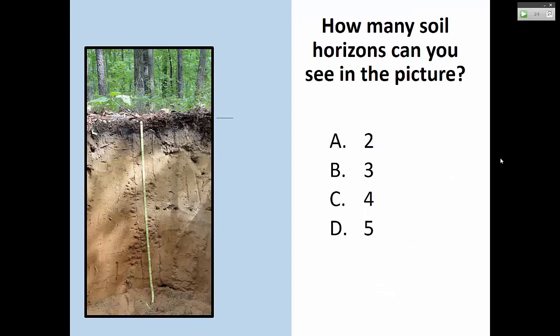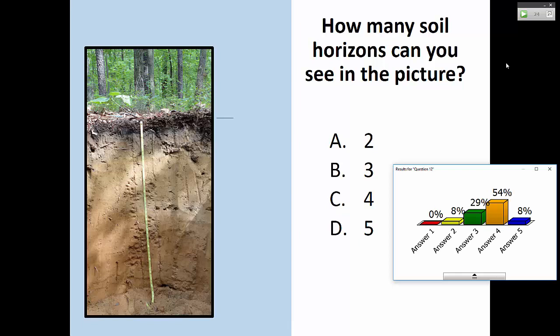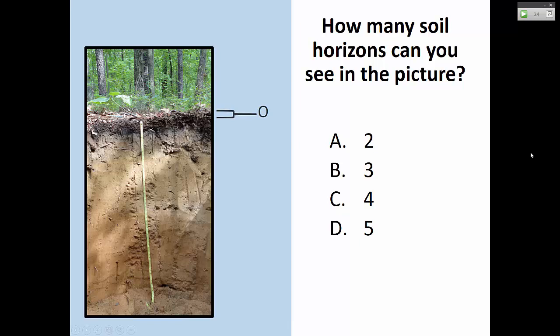Example: how many soil horizons do you see in this picture? Most people said four or five. Going through it: there's an O horizon with leaf litter at the top, then the dark topsoil as the A horizon, then a lighter area which is the E horizon where stuff has been leached out, then one B layer, and actually a second B layer. Soil scientists are so particular about this that universities even have competitive soil judging teams — University of Maryland's team won the national championship this past year.